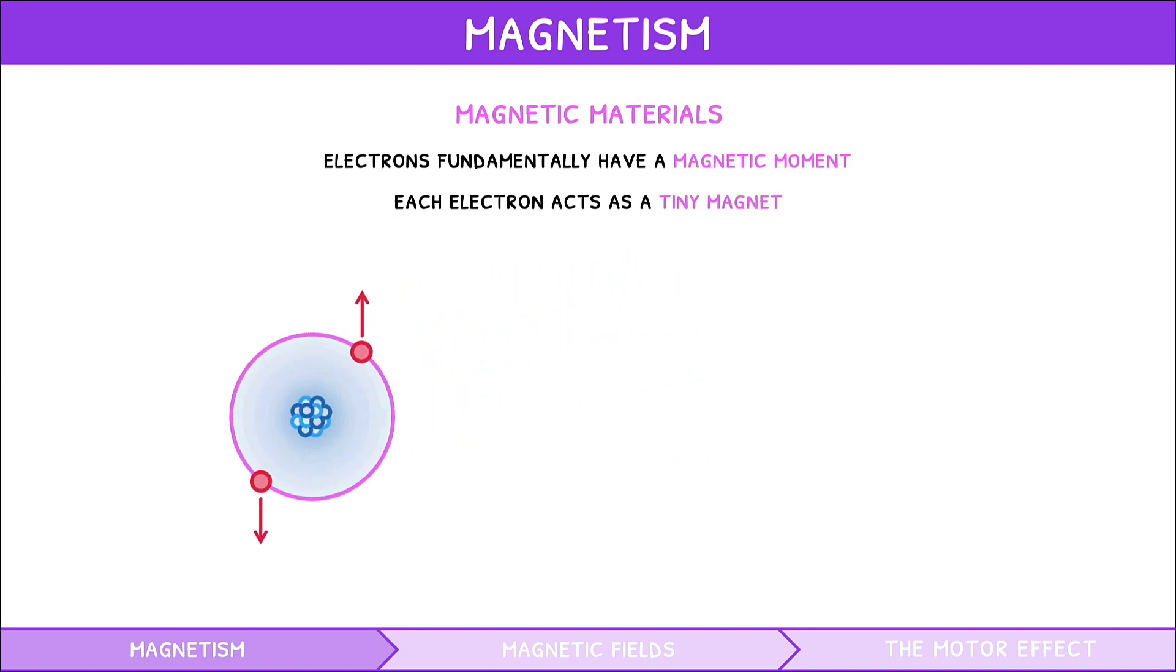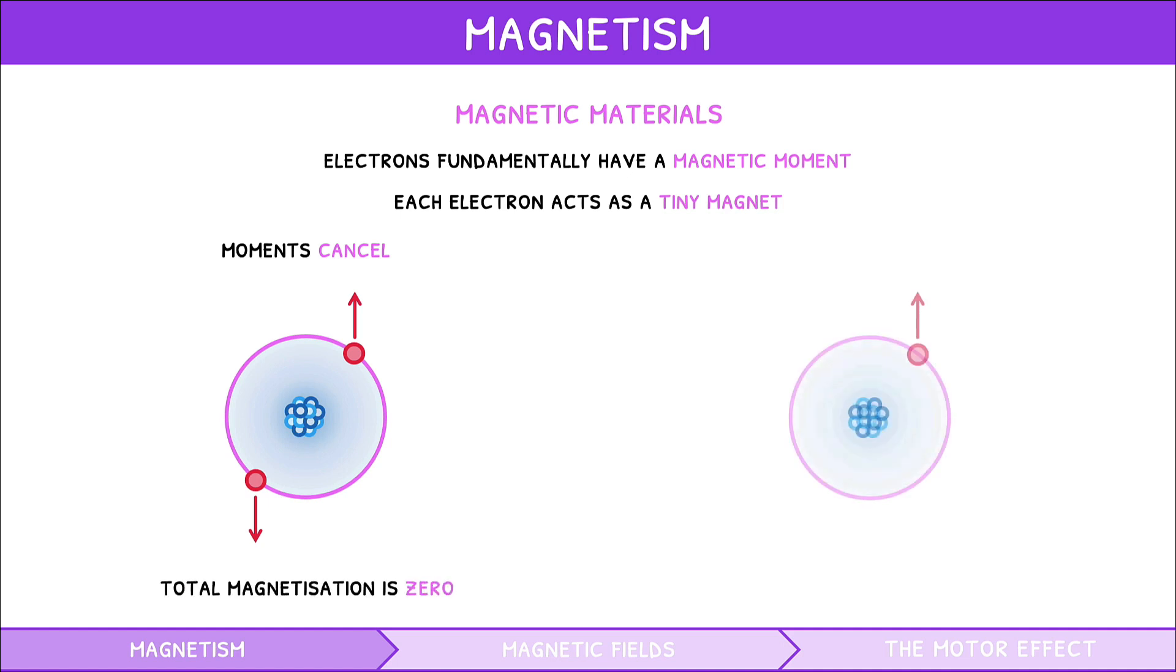In many atoms, the magnetic moments of the electrons cancel, so that the total magnetization of the atom is zero. However, in some atoms these magnetic moments do not cancel and thus align to create a magnetic field around the atom.